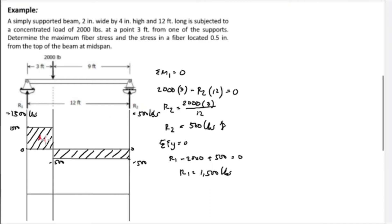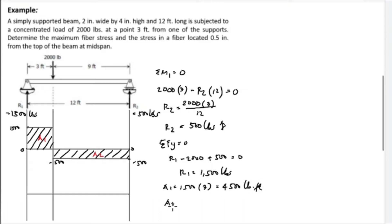To find the moments using areas from the shear diagram: Area 1 is a rectangle with height 1,500 pounds and width 3 feet, giving 1,500 times 3 equals 4,500 pound-feet. Area 2 is a rectangle with height negative 500 pounds and width 9 feet, giving negative 500 times 9 equals negative 4,500 pound-feet.